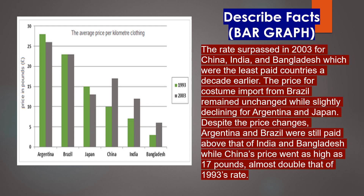The rates surpassed in 2003 for China, India and Japan, which were the least paid countries a decade earlier. The price for costume import from Brazil remained unchanged while slightly declining for Argentina and Japan. Despite the price changes, Argentina and Brazil were still paid above that of India and Bangladesh, while China's price went as high as 17 pounds — almost double that of 1993's rate.